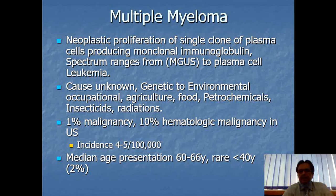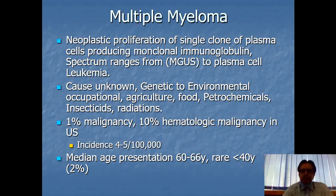Because MGUS and plasma cell leukemia have similar features to multiple myeloma, there is sometimes confusion in finalizing the diagnosis. That is why the range has been described as extending from MGUS to plasma cell leukemia.